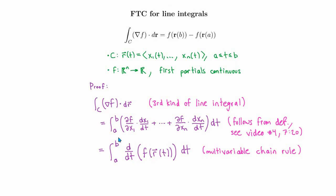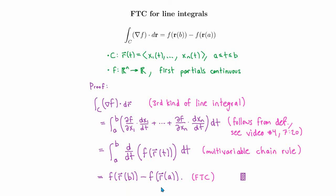Now the integrand is just a regular function of t. From the usual fundamental theorem of calculus, we recognize right away that the integral equals the value of f at the right endpoint r(b), minus the value of f at the left endpoint. That concludes the proof of the fundamental theorem of calculus for line integrals. After some manipulation involving definitions and the chain rule, it indeed followed from the regular fundamental theorem of calculus.